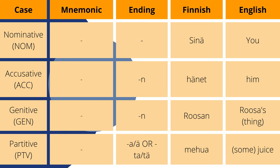The partitive case has a case ending of -a, -ä, -ta, or -tä. The example we have here is mehua, meaning 'some juice.' Mehu means juice and mehua means some juice. It is used after numbers or other words that show a quantity and it's used to indicate an amount of a greater whole. For example, the juice in question is not all of the juice that I have — it's just the juice I have in the cup. Because these cases and their case endings are relatively simple, I didn't include them in the mnemonic.